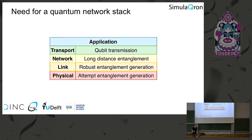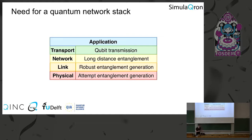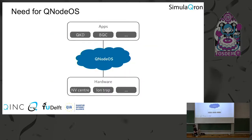One thing we need is a quantum network stack — similar to TCP/IP in classical networking — that abstracts certain functionalities. We have a proposal for such a stack, including a link layer protocol that generates entanglement between directly connected nodes, and a network layer protocol that generates entanglement between nodes not directly connected. We also need a full-fledged operating system between the application and hardware that handles entanglement generation, local gates, scheduling, and memory management.